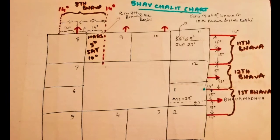Now look at this diagram carefully. This shows the Rashi chart of a person born in the Simalagma. The Lagna or Ascendant is at 29 degrees in the Simalagma, or the sign of Leo. So Leo is the first Rashi, second Rashi is Virgo, third Rashi is Tula, fourth Rashi is Scorpio and so on. The twelfth Rashi is Karkarashi. This is the Rashi chart which is shown in black.